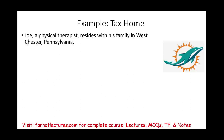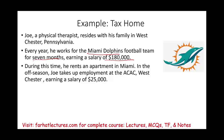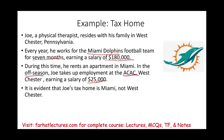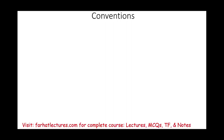Consider Joe, a physical therapist who resides with his family in Westchester, Pennsylvania. Every year he works for the Miami Dolphins in Florida for seven months, earning $180,000, renting an apartment in Miami. During the off-season he returns to Westchester and works at ACAC, earning $25,000. His tax home is Miami — not Westchester — because that is where he derives most of his income. As a result, his living expenses in Miami, such as food and lodging, cannot be deducted.